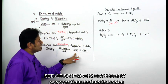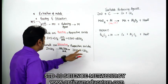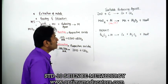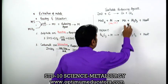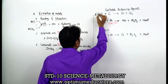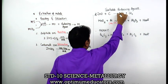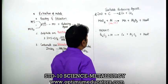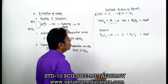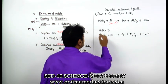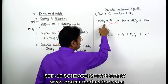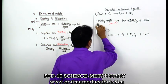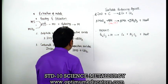For MnO2 + Al → Mn + Al2O3: since Al2O3 has 3 oxygens, multiply MnO2 by 3 to get 6 oxygens, then multiply Al2O3 by 2 to get 6 oxygens, and multiply Al by 4 - giving 3MnO2 + 4Al → 3Mn + 2Al2O3. For Fe2O3 + Al → Fe + Al2O3: balance by making Fe as 2 and Al as 2, giving Fe2O3 + 2Al → 2Fe + Al2O3.